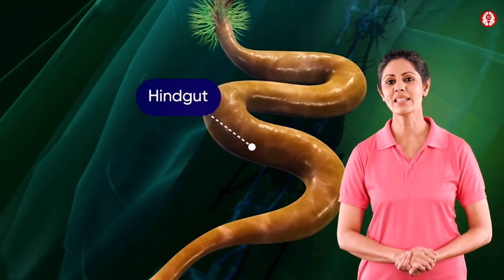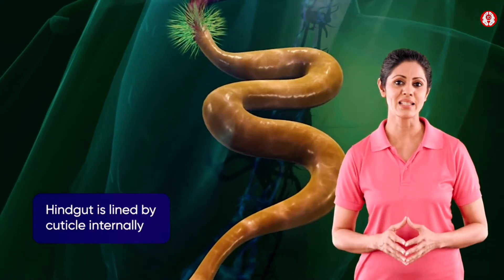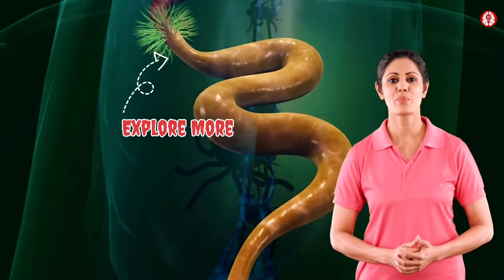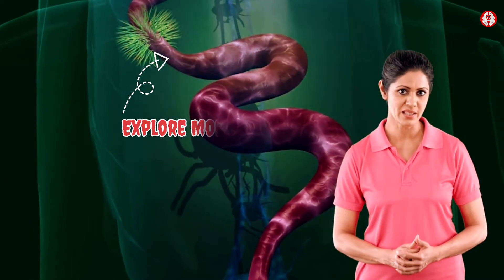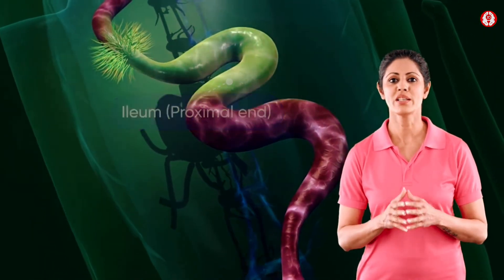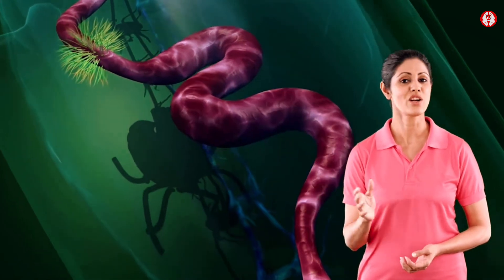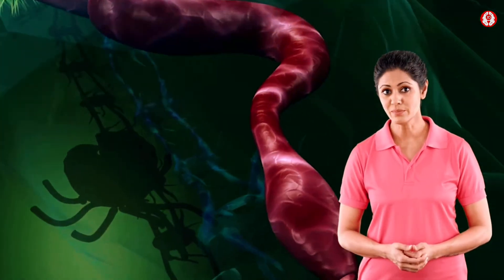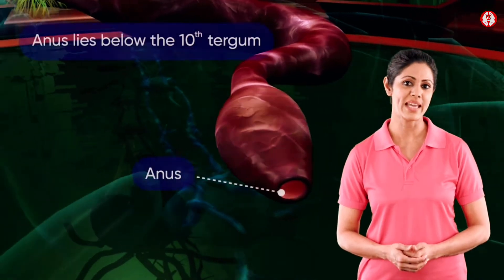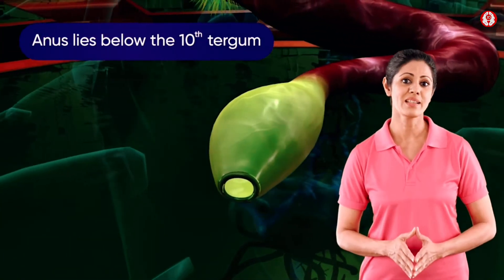The hindgut is slightly broader than the midgut and is lined with cuticles internally. The proximal region of the hindgut, the ileum, is followed by a coiled colon, which leads to the sac-like rectum. The rectum opens to the exterior by means of the anus, which lies below the tenth tergum.